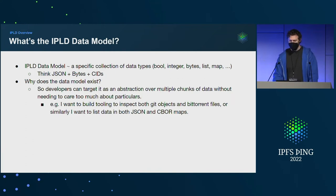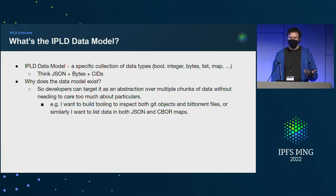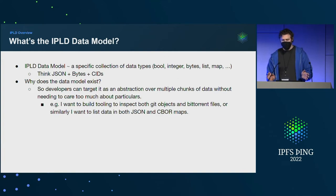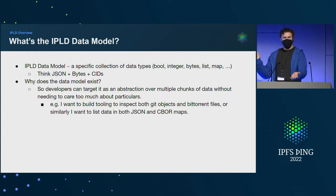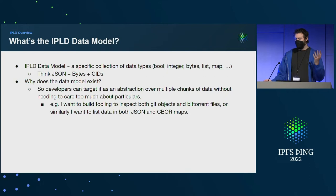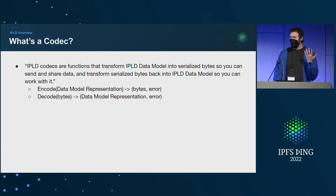IPLD overview for those less familiar: there's the IPLD data model, which is basically JSON plus bytes plus CIDs. It exists so you can target the data model as an abstraction over different types of data without needing to care about the particulars. There are Git files and BitTorrent files and I just want to look at them as bytes and files. There are JSON maps and CBOR maps and I just want them to be maps. IPLD codecs transform bytes into the data model and the data model back to bytes.